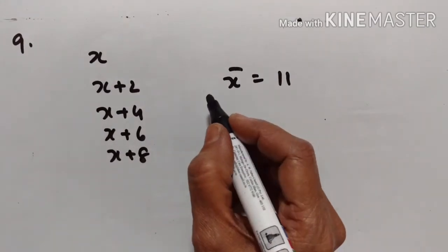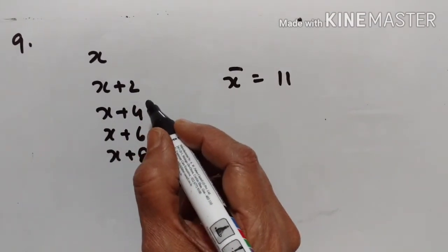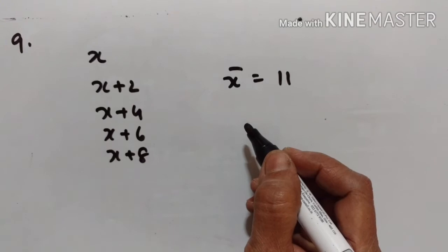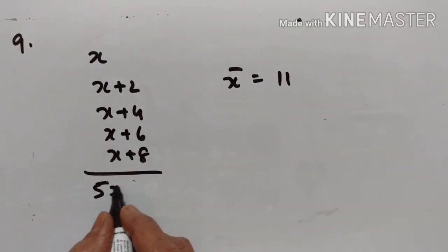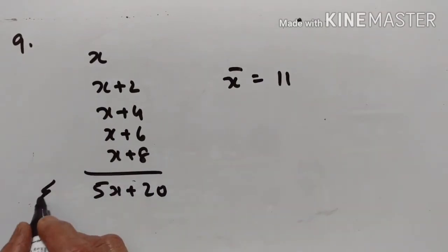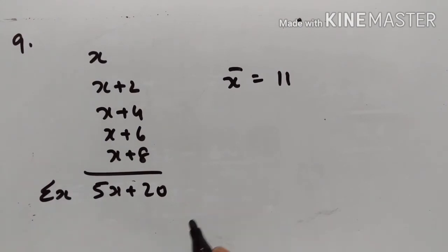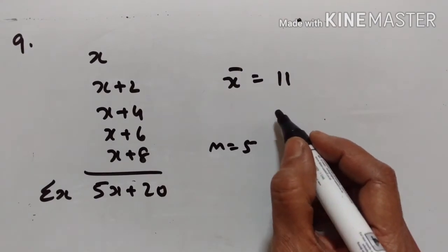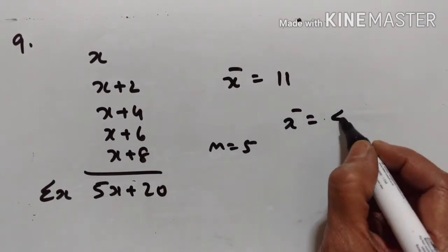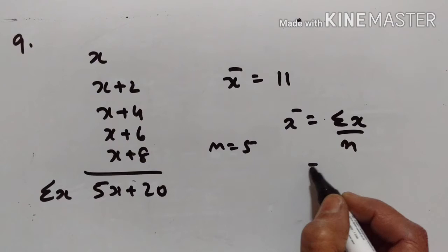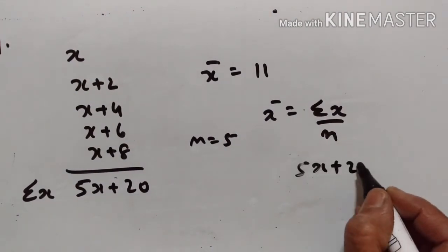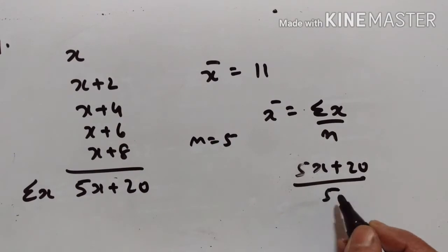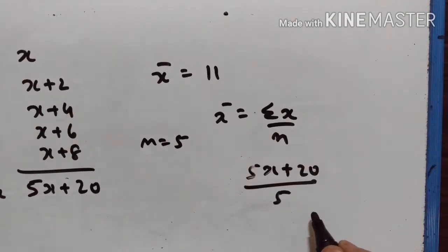9th problem: if the mean of observations x, x+2, x+4, x+6, and x+8 is 11, find the value of x. The sum is 5x plus 20. There are 5 observations, so n is equal to 5. Mean is equal to sigma x upon n, so sum 5x plus 20 divided by n equals 5.